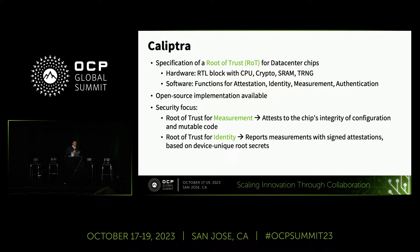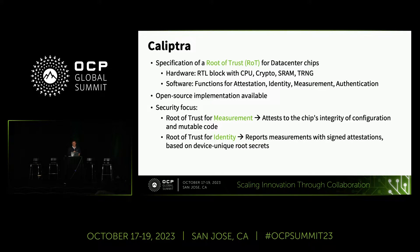In particular, we'll focus on the root of trust for measurement, which attests to the chip's integrity — the configuration and the mutable code — and the root of trust for identity, where device unique secrets come in. How do you create those, and how do you make sure they are secure?